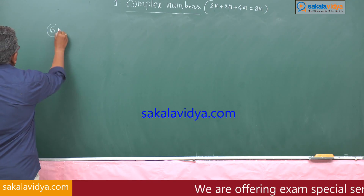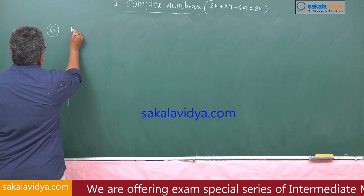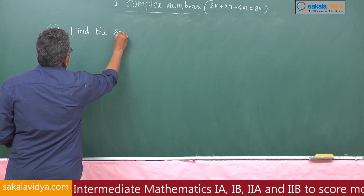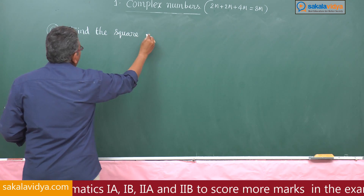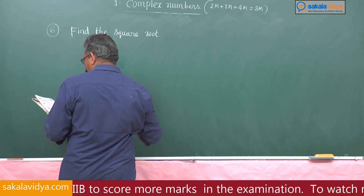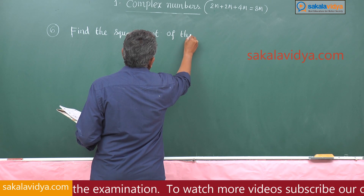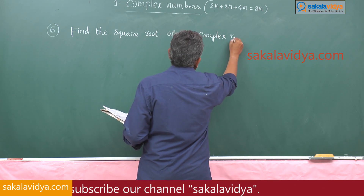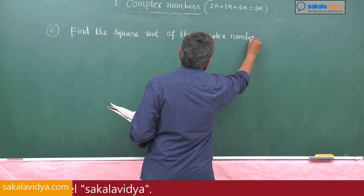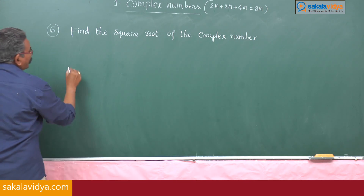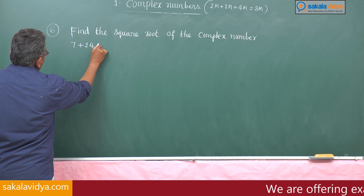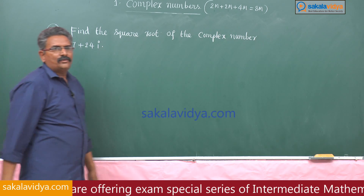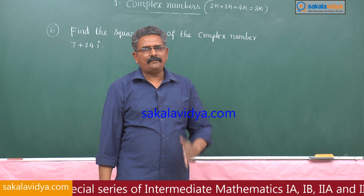Sixth question: find the square root of the complex number 7 plus 24i.